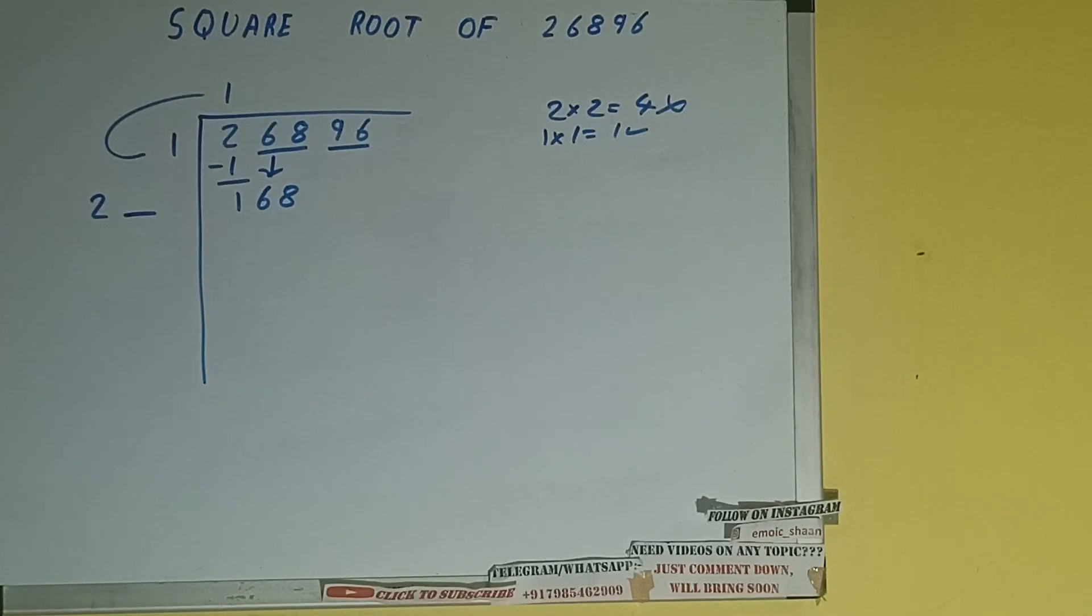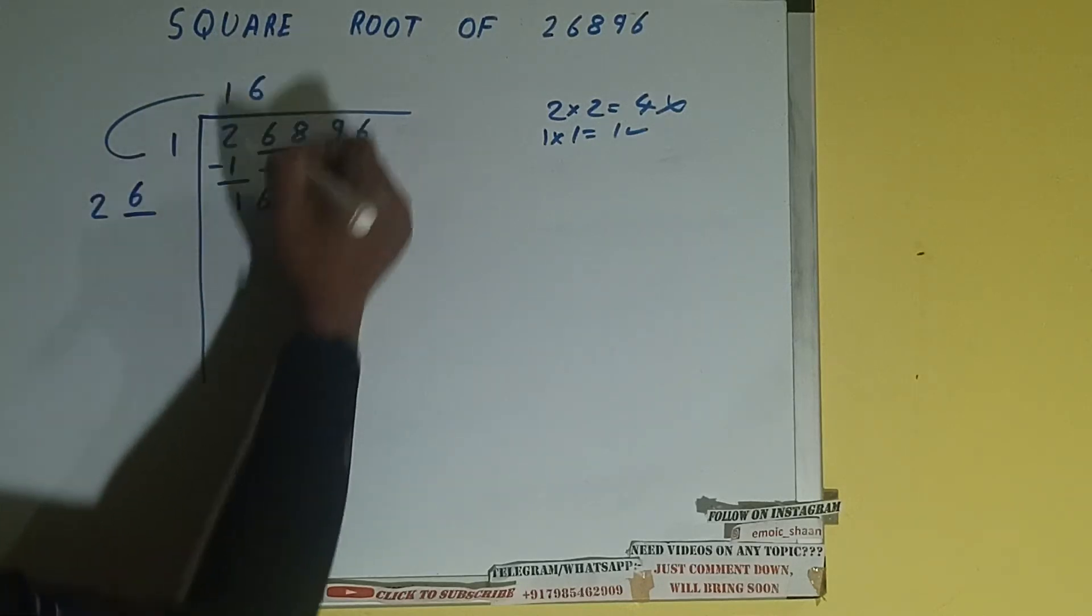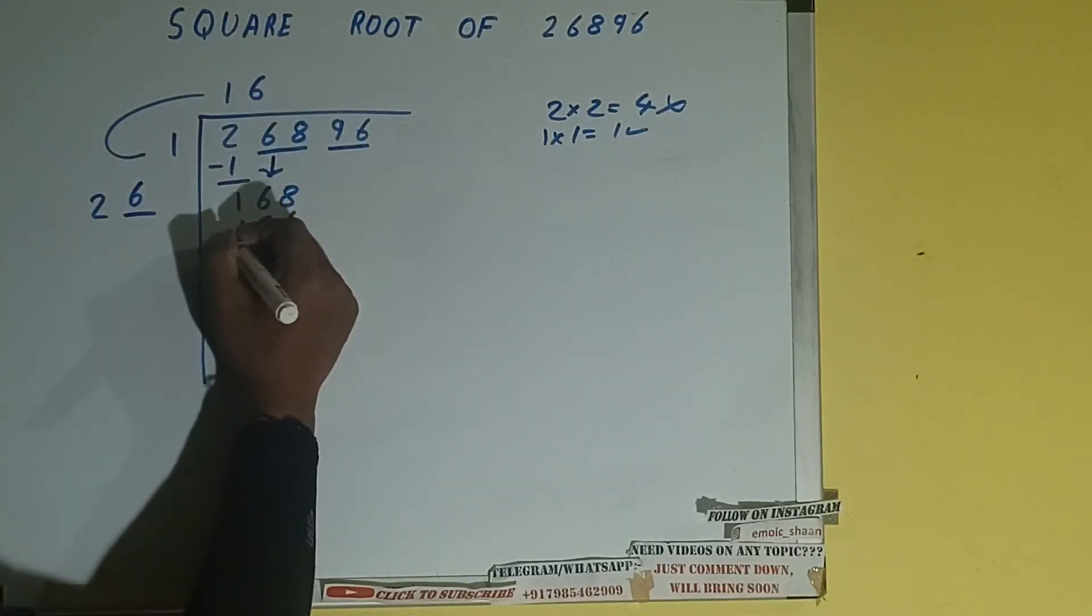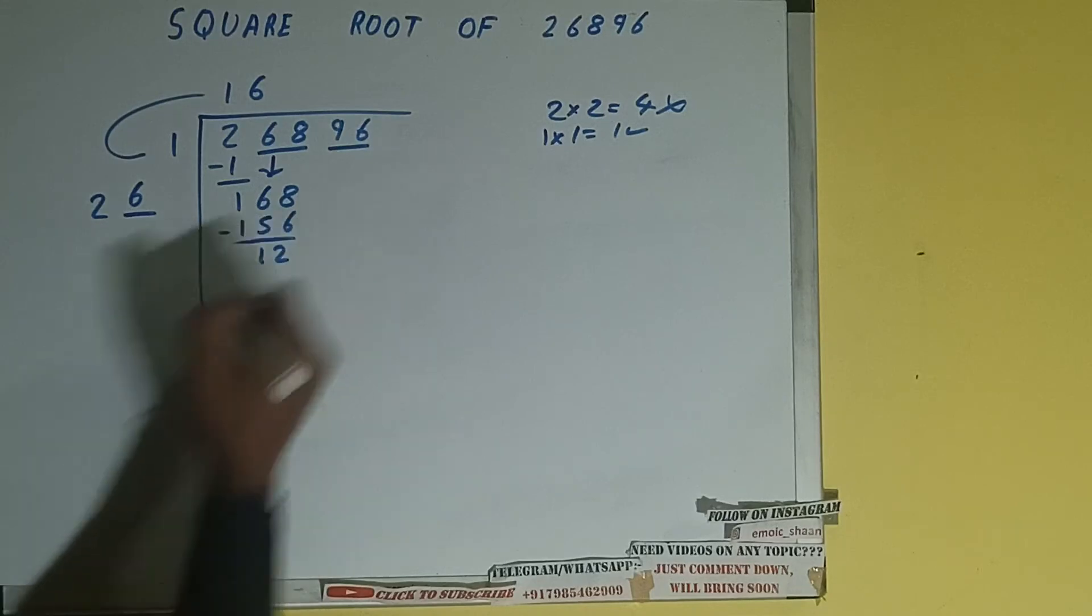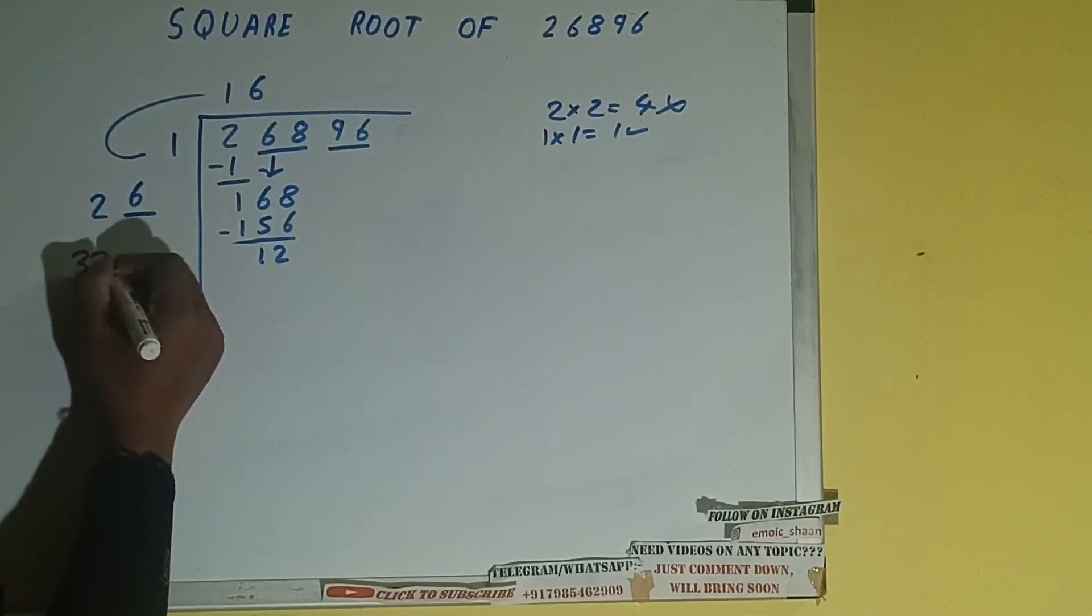Now whatever number we write here, we need to write here also. So if we try 6 times, that is 6 here and 6 here, it will be 156. Subtract, 12 will be left. Now 26 into 6 we did, so add both: 26 plus 6 will be 32.